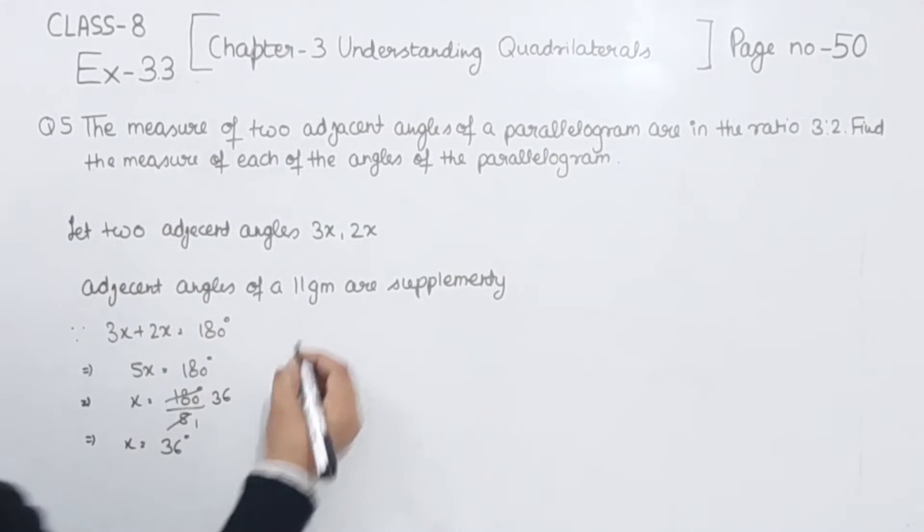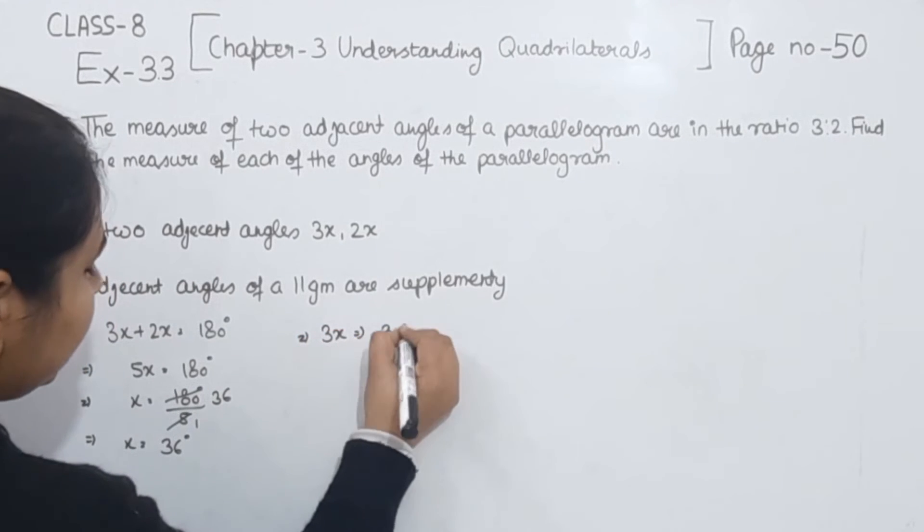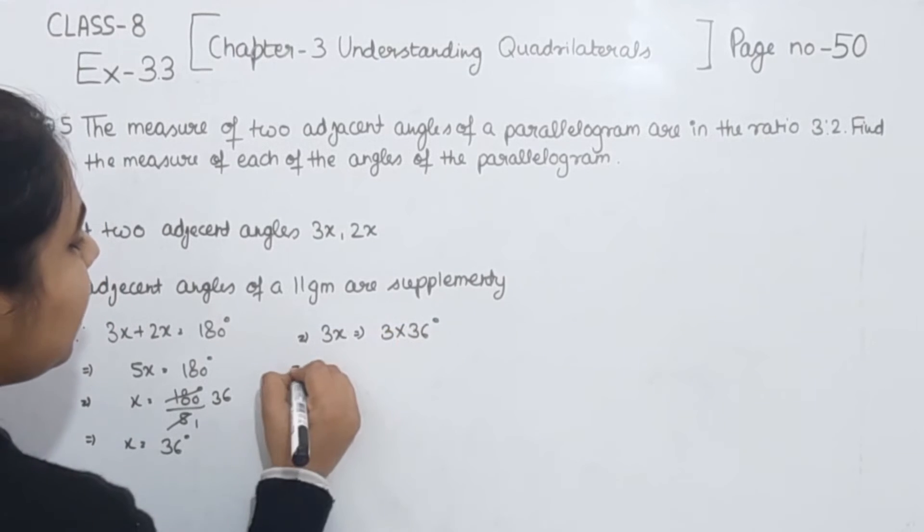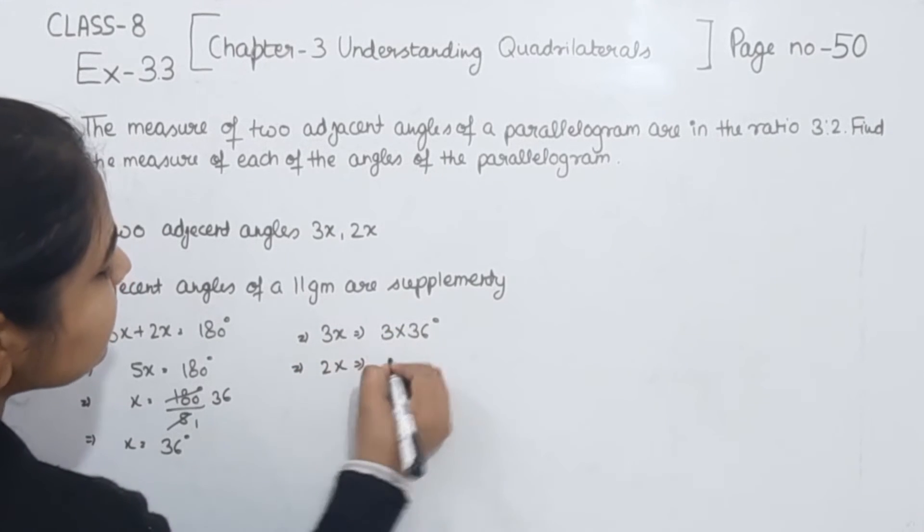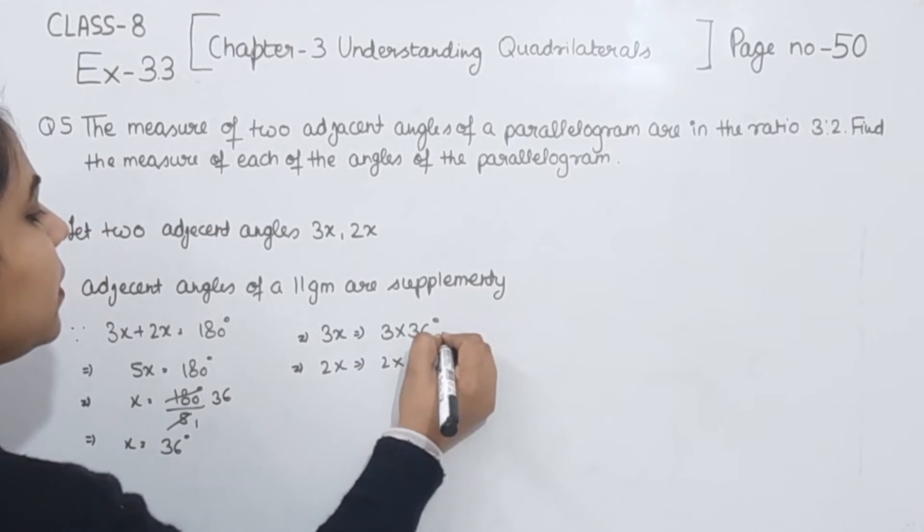So, the first angle we will have as 3x, so 3 multiplied by 36 and the second one we are having 2x that is 2 multiplied by 36 degrees.